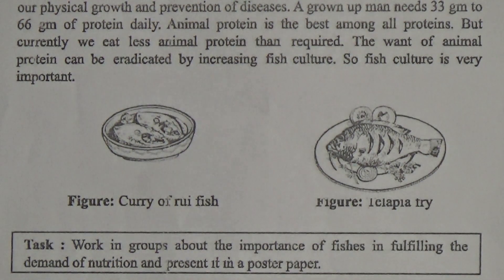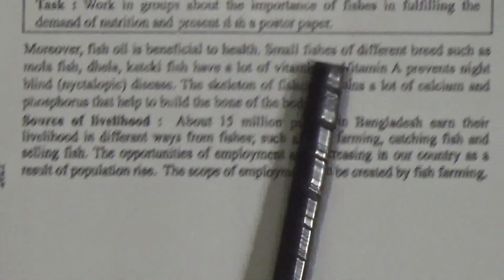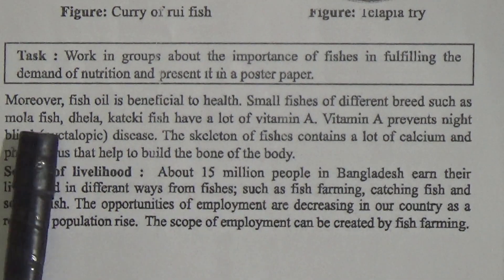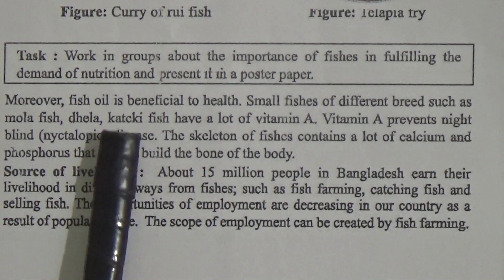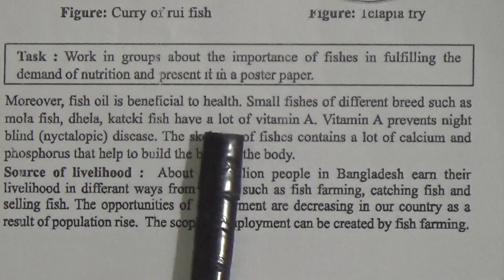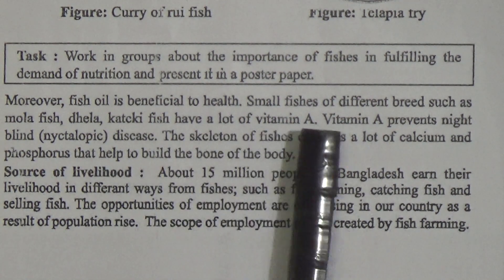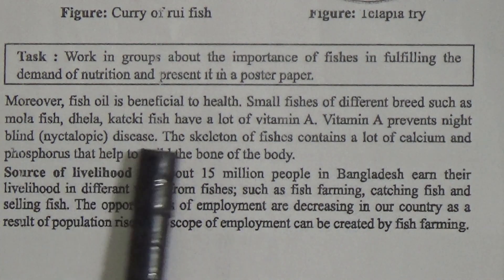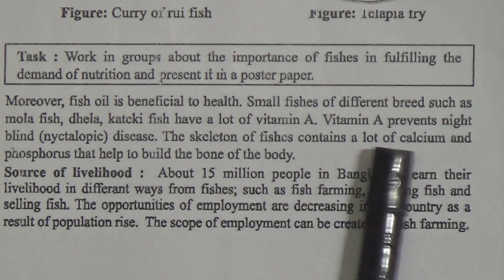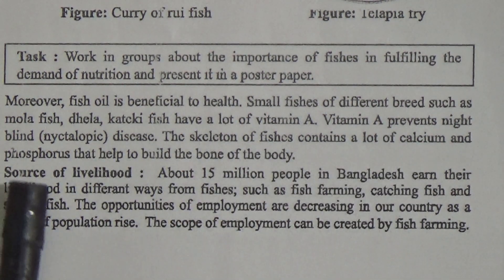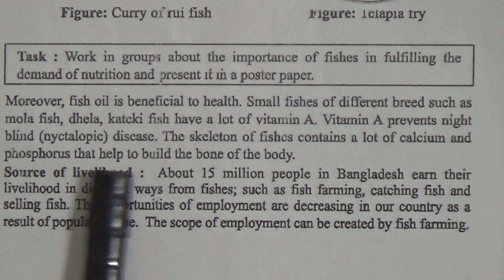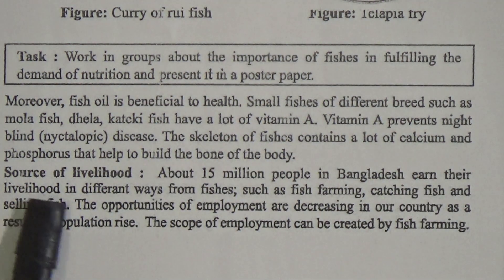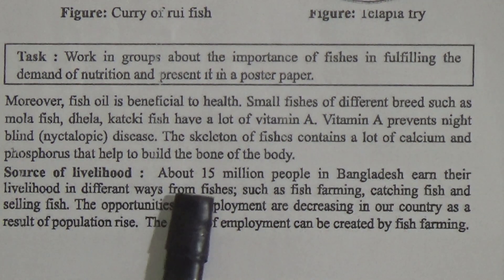Moreover, fish oil is beneficial to health. Small fishes of different breeds such as mola fish and jala kachi fish have a lot of Vitamin A. Vitamin A prevents night blindness. The skeleton of fishes contains a lot of calcium and phosphorus that help to build the bones of the body.